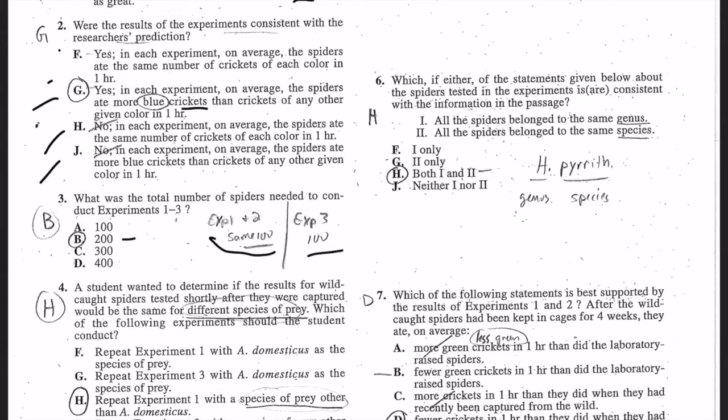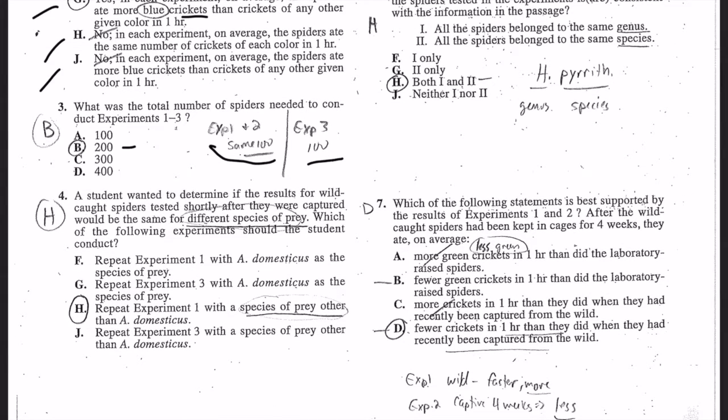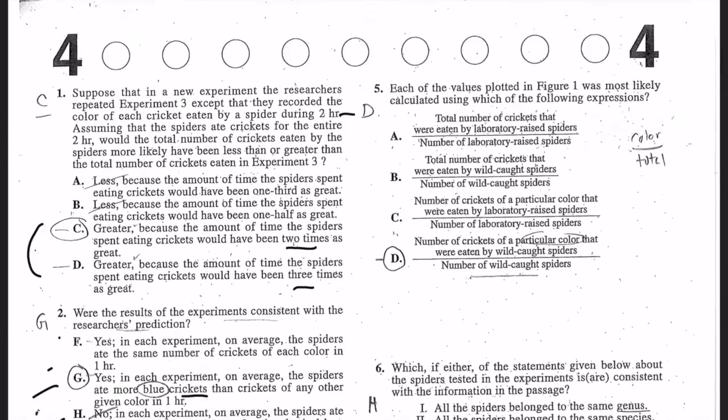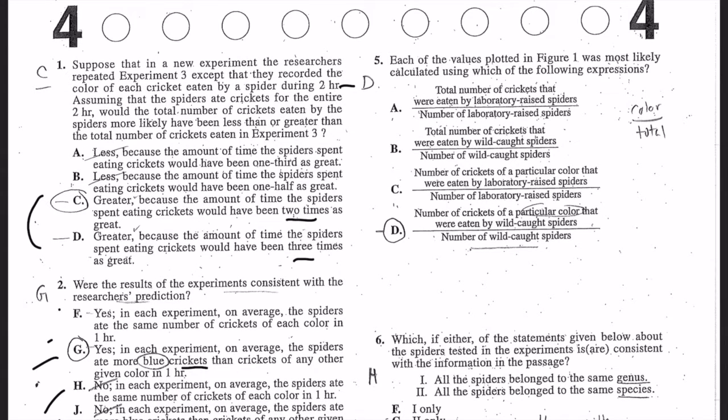Question two: it says yes, yes, no, no. Well we don't want no in this one because it is consistent with the predictions - there's more blue crickets and there's a big one for the blue. Two is G. Number three was kind of tricky - I almost said it was 300, but it's the same 100 wild spiders and then the different 100 lab-grown spiders, so it's 200 total. You do have to go into the reading for those. Number four is H - the species of prey other than domesticus. You want a different species, other than A. domesticus.